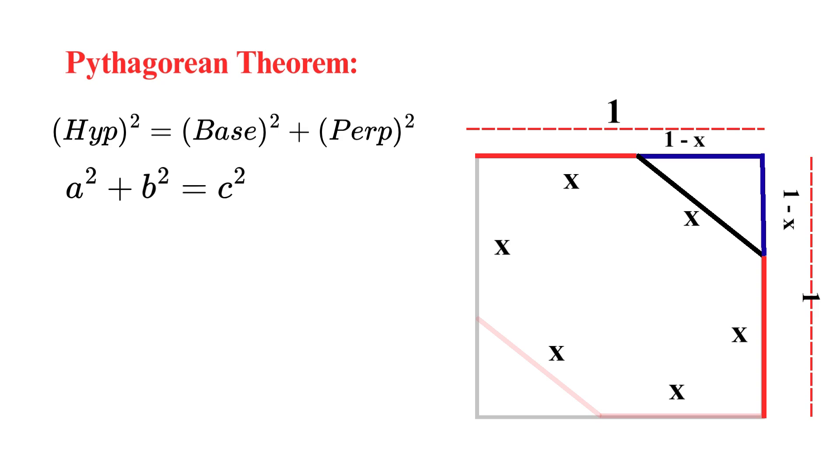Now, we can write our equation as we take the first leg, which is 1 minus x, and square it. Then, we add the second leg also. That is, (1 - x)². And that equals the hypotenuse squared, which is x². So, our equation becomes (1 - x)² + (1 - x)² = x².